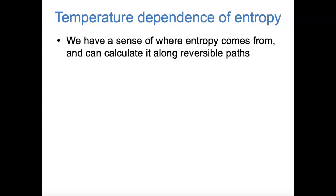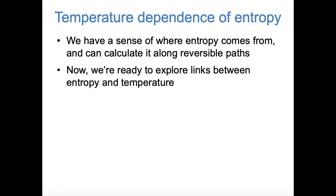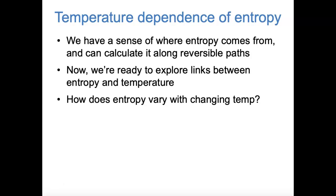In order to do this, we need to think about the temperature dependence of entropy. Based on the two previous videos, we have a sense of where entropy comes from from a microscopic standpoint, and we can calculate changes in entropy in reversible paths of a pressure volume diagram. The big question here is how does entropy vary as temperature changes? When you first learn about entropy in general chemistry, you learn a vague idea that entropy is a measure of disorder, so you might guess that entropy increases as temperature increases. It turns out that's correct, but we can be more quantitative about it.